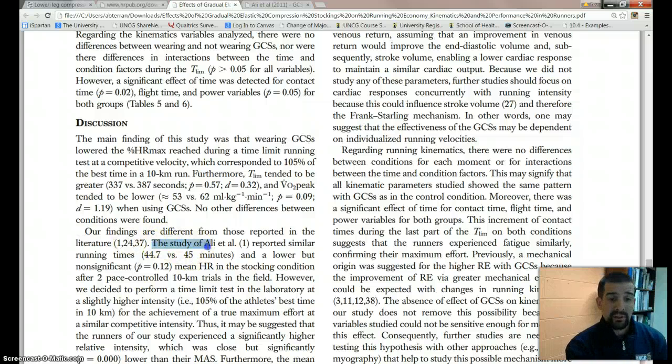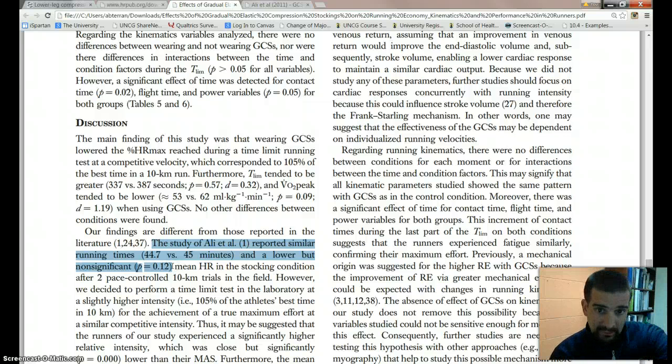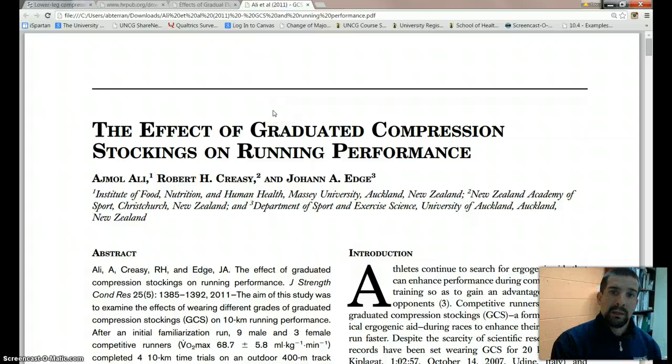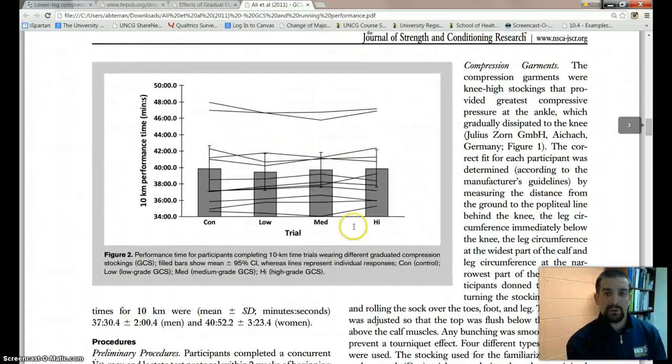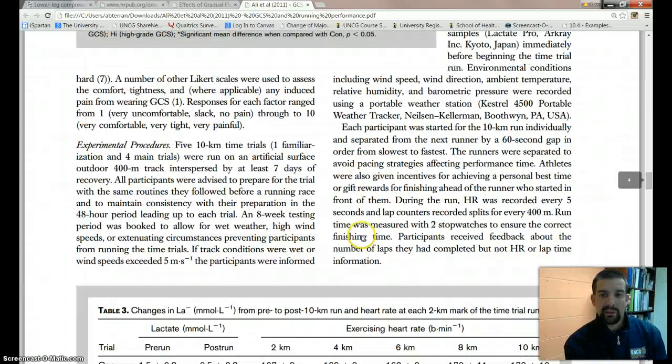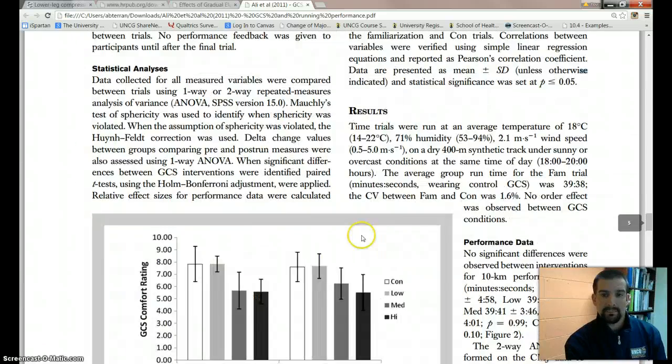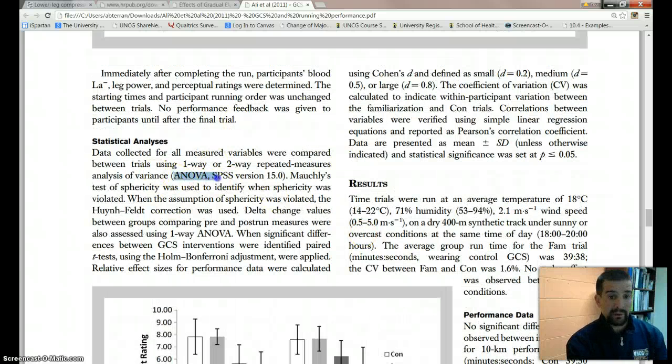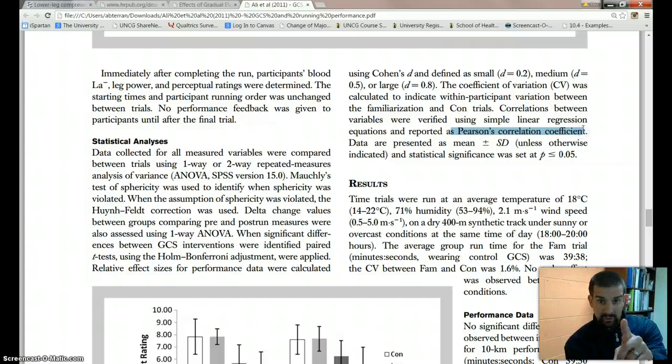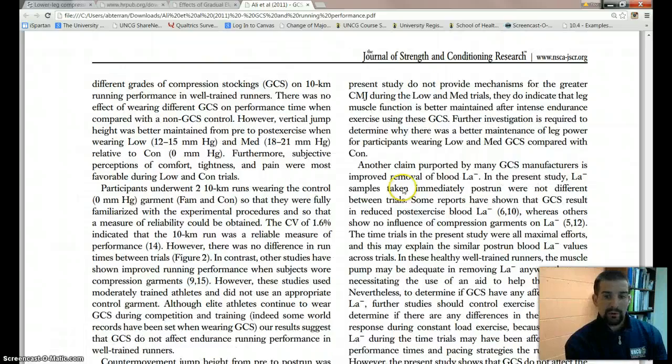And so you read a little bit further and they said our findings are different than those reported in the literature. The study of Ali reported similar times in a lower but non-significant. So this study by Ali was different than this current study. So what do you do? Well, you pick up the Ali study and there it is. And I dug for this study and same concept, same idea. And again, if you scroll down through here, you can see your statistical setup is coming up. Oh, there's statistical analysis. There's your ANOVA one-way, two-way repeated measures right there. There's your P value right there. They even ran a correlation, which we'll talk about.